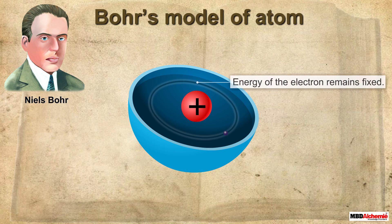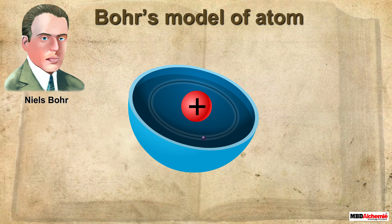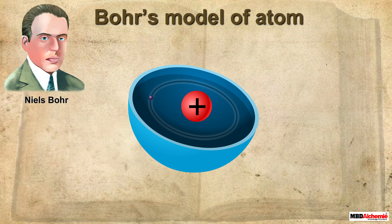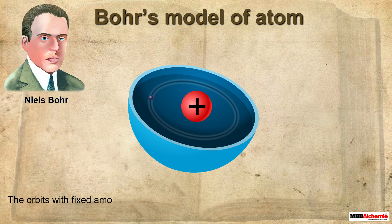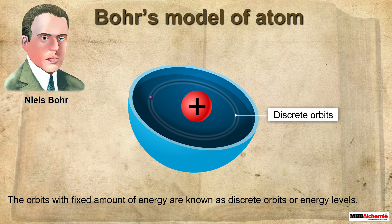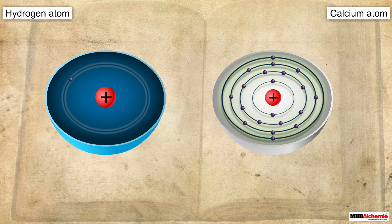Bohr explained that the energy of electrons remains fixed because they are restricted to some fixed orbits. Each of these orbits is at a fixed distance from the nucleus and is associated with a fixed amount of energy. These orbits with fixed energy are known as discrete orbits or energy levels. These energy levels are represented by the letters K, L, M or the numbers 1, 2, 3, 4 starting from the center.